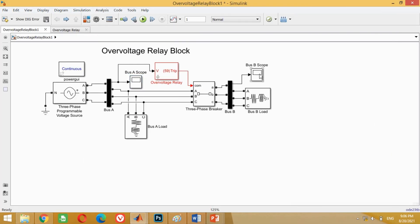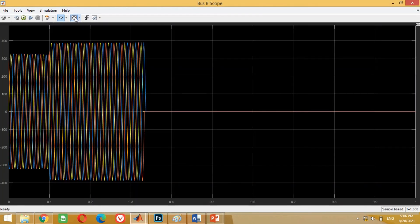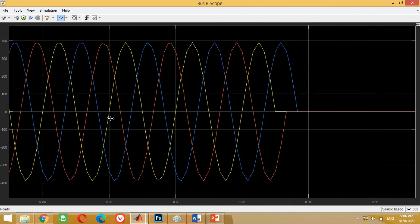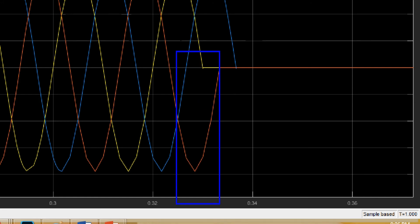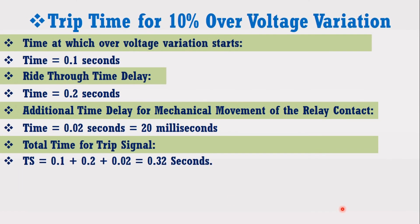Double click on Scope B at Bus 2 to check its voltage. You can see it shows that the overvoltage relay has successfully operated and disconnected the load. At 0.33 seconds, the overvoltage relay has disconnected the load. Comparing the trip signal time with the mathematically calculated time, both times are almost accurate. This means that when the system voltage rises to 10% of the original voltage, the overvoltage relay successfully detected this voltage rise and disconnected the load at 0.33 seconds by sending the trip signal to the circuit breaker.